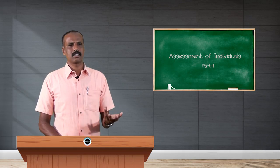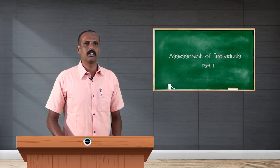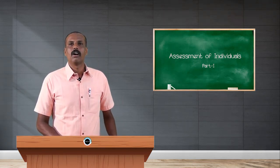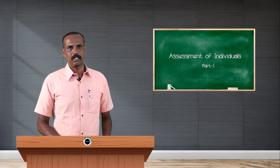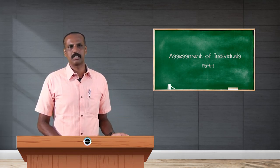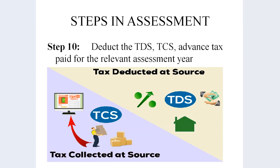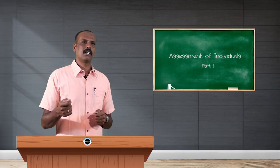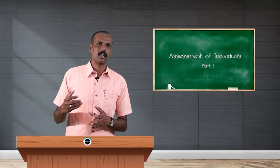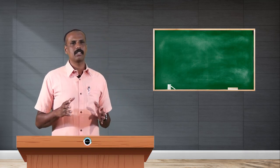Step 8 is adding surcharge. The surcharge is 10% of tax if income exceeds ₹50 lakh, and 15% of tax if income exceeds ₹1 crore. Additionally, 4% health and education cess is to be added. Up to here we have covered the main steps for assessing individual income. In the next class, we will discuss the remaining steps and how to calculate the tax.